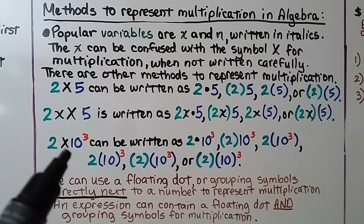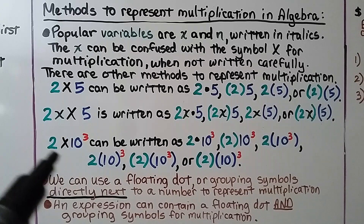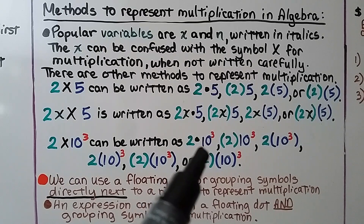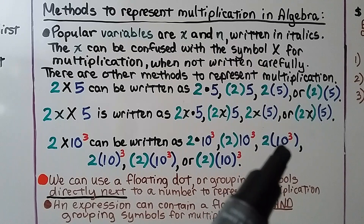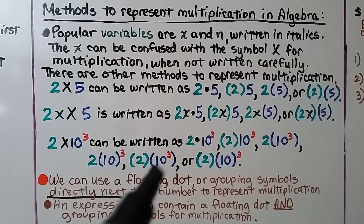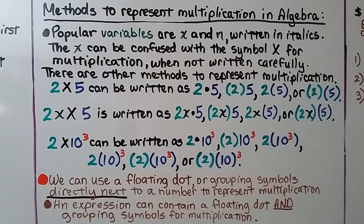For powers of 10 — for example, 2 times 10 to the third power — you'll see it written in various ways, especially in scientific notation in upcoming grades. It can be written with a floating dot between them, with 2 in parentheses, with 10³ in parentheses, with 10 in parentheses and the exponent 3 outside, or with both factors in parentheses with the exponent inside or outside. There are many ways to represent multiplication, especially with exponents in algebra.